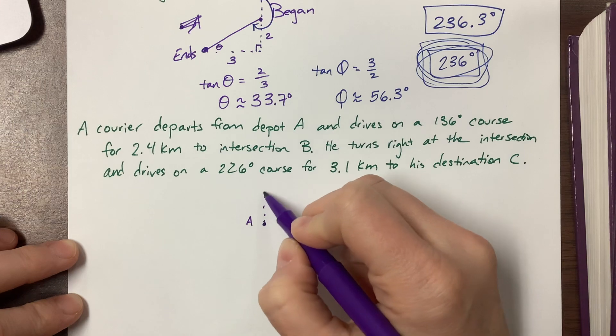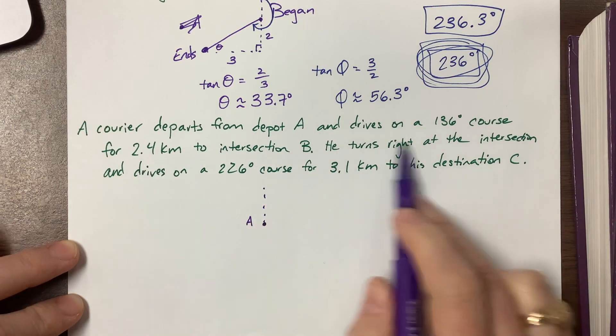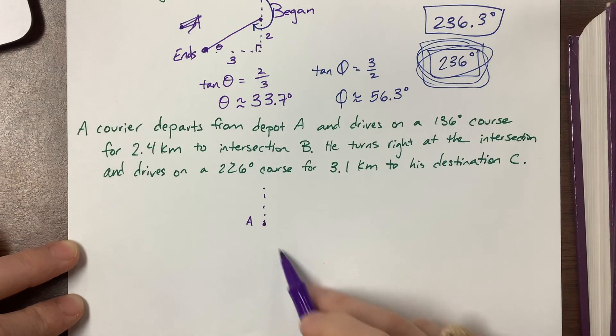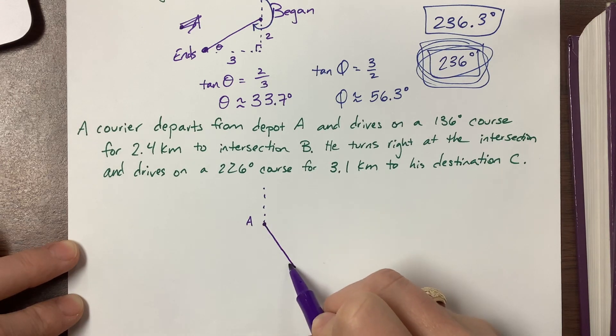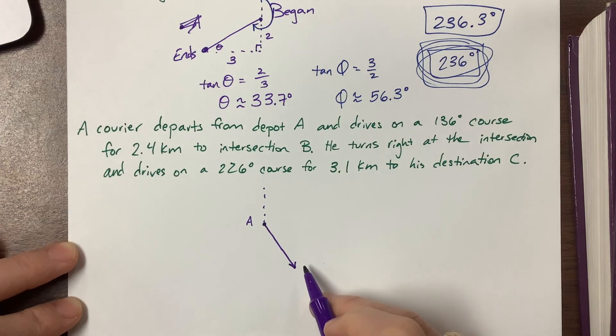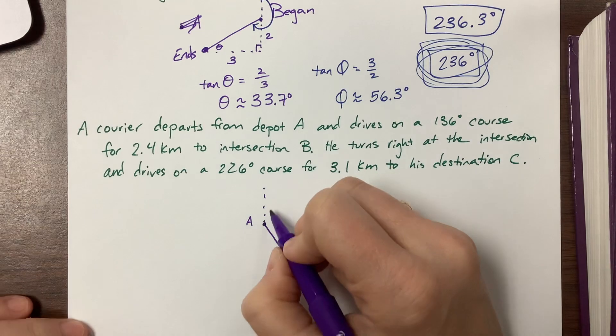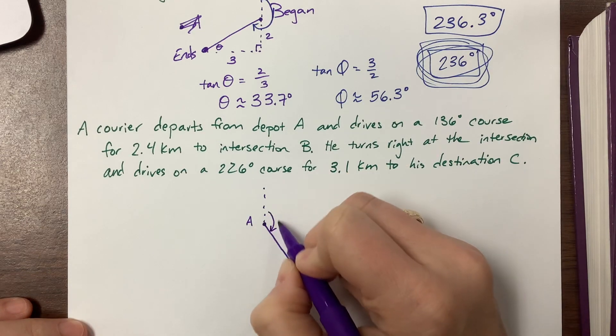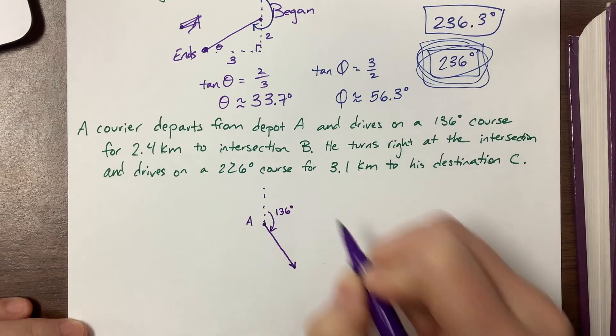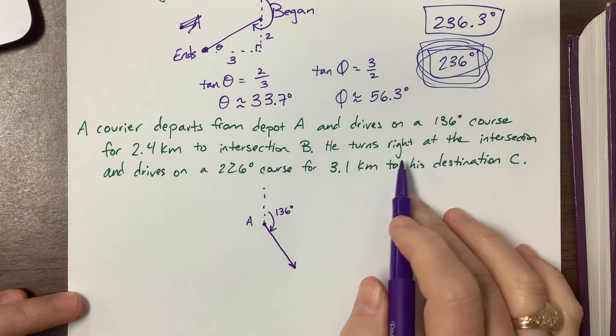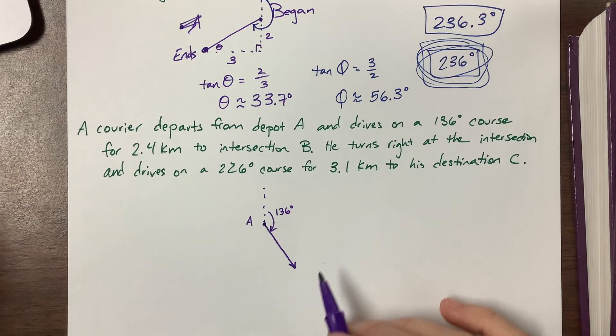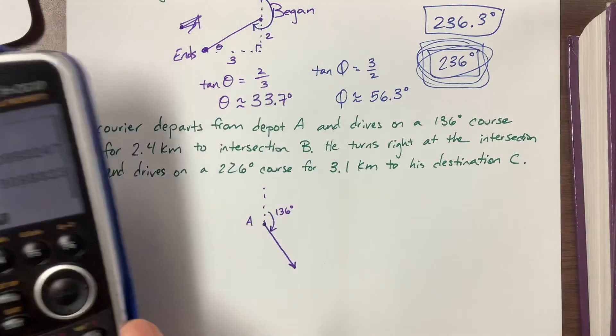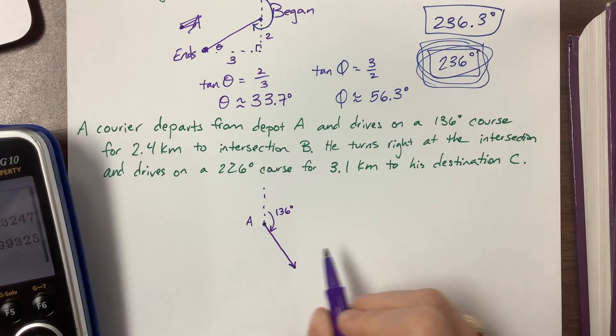So what are we talking about? Here is true north. So 136 is going to be, well here's 90, so it's going to be somewhere bigger than that. So he's going to be coming this way right here. Notice the path that he took I made as a solid line. There you go. So this angle here was 136.